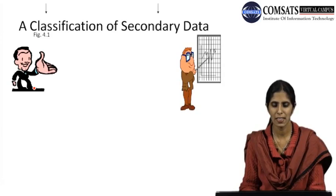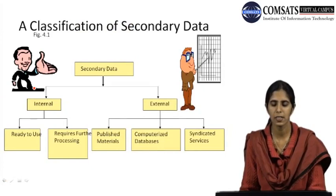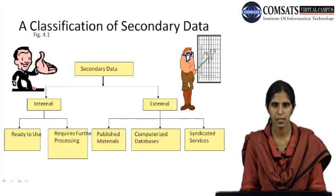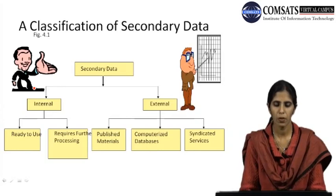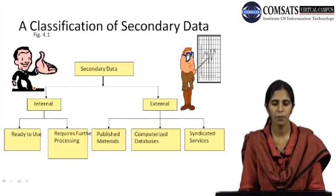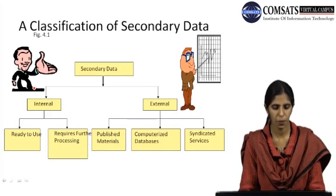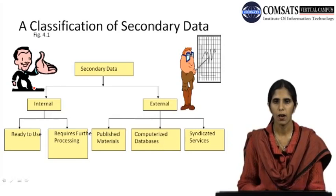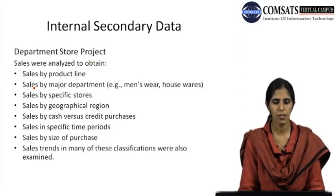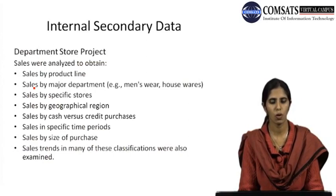Secondary data can be classified into two terms: internal and external. For internal sources, we talk about ready-to-use data and data that requires some further processing. For external sources, we talk about published materials, computerized databases, and syndicated services that sell data for specified purposes.